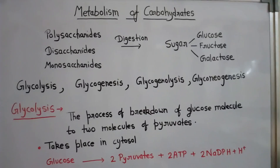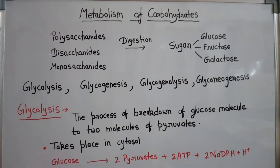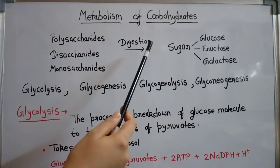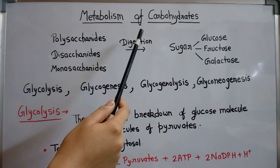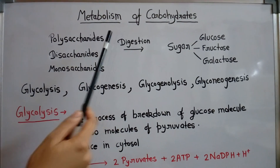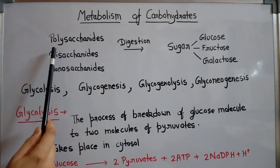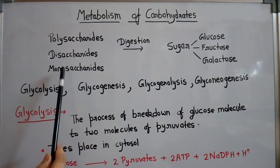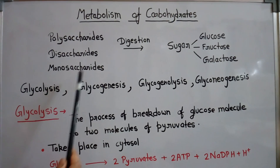Hello friends, today we will understand the metabolism of carbohydrates. Carbohydrates are the main part of our food. These are present in the form of polysaccharides, disaccharides, and monosaccharides.